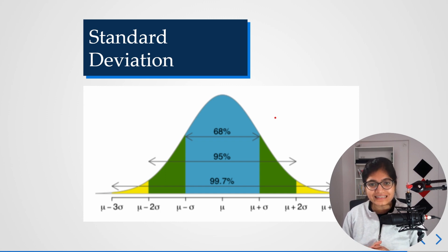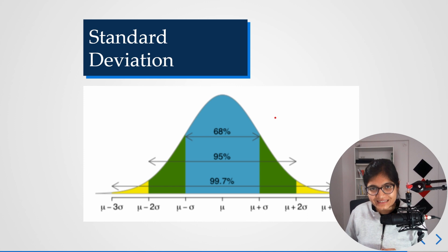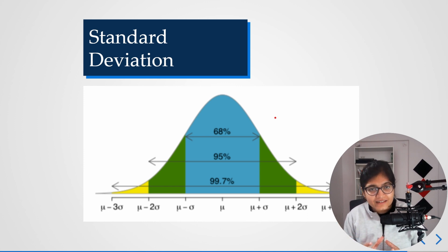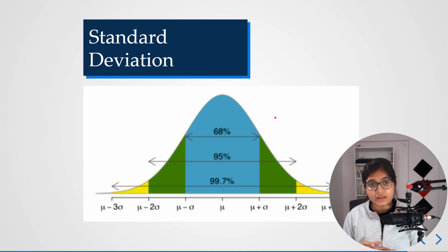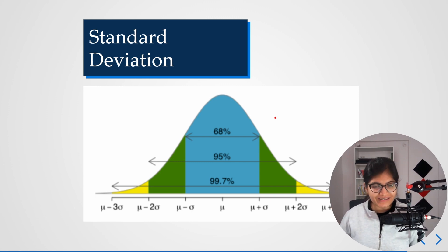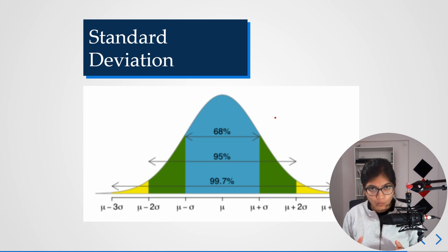Today I want to discuss how, whenever we say that our data is normally distributed, as a standard rule of thumb, how we can check what percentage of data is distributed. As you can see on the graph, a bell-shaped curve is plotted here.